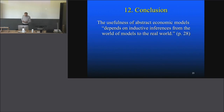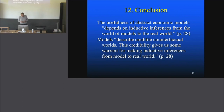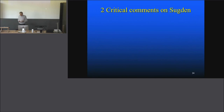He comes to the conclusion: the usefulness of abstract economic models depends on inductive inferences from the world of models to the real world — you generalize from the world of models to the real world, just as you would generalize from observing ten pieces of copper that conduct electricity to the next piece. Models describe credible counterfactual worlds. This credibility gives us some warrant for making inductive inferences from model to real world. So this is Sugden: critically discussing the literature before him and then making a proposal himself, which we are going to discuss critically.